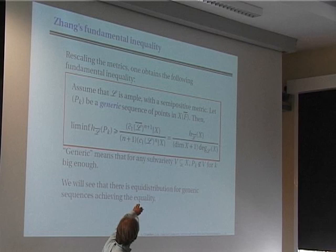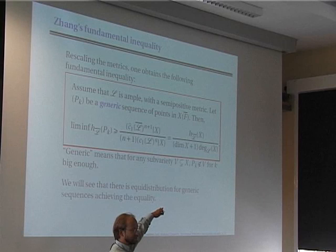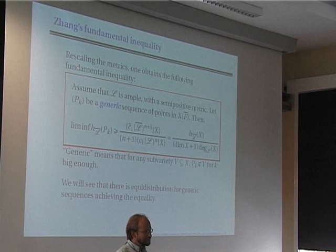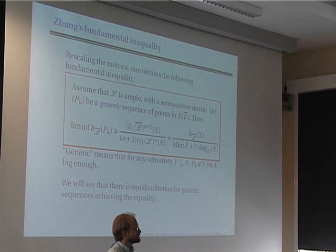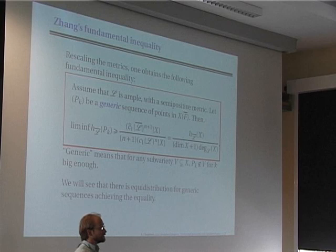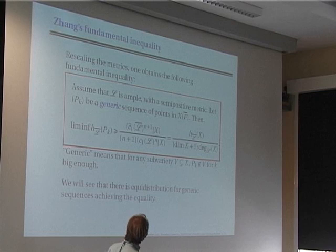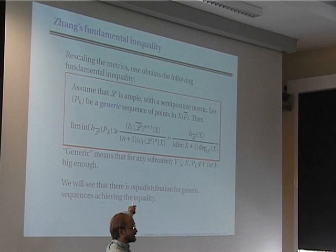This tells you that if the height of the variety is non-negative, then except on some closed subsets the height will be at least −ε for any ε > 0. And what happens in equidistribution theory is that if you find a sequence of points P_k achieving equality in this formula, then this sequence will be equidistributed.